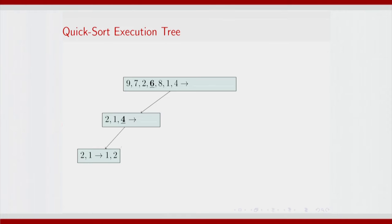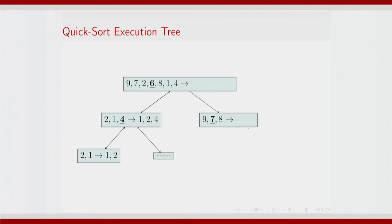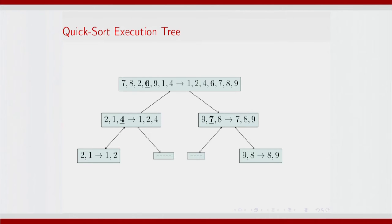We are not invoking conquer again. We could do the same thing on the right-hand side. Combine happens at every level. So we have combined at the top level, now merging l, g and e — this is of course after several more invocations of conquer and combine for the g part.